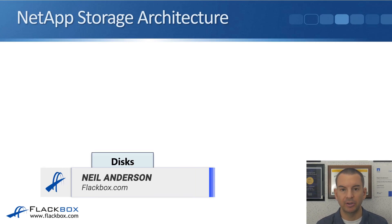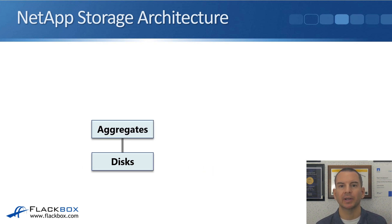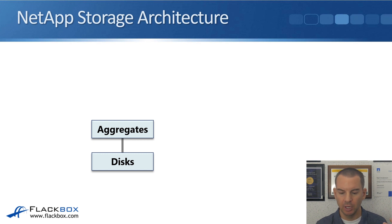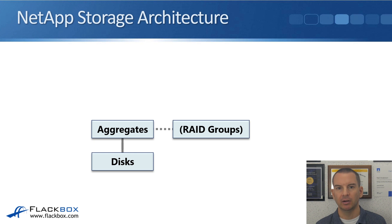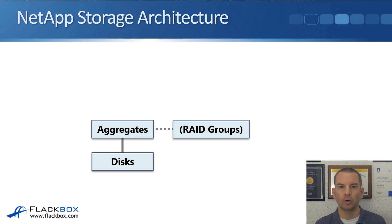The first thing at the bottom is our disks, our physical hard drives. The drives are organized into aggregates — an aggregate is just a collection of physical drives. One of the attributes on an aggregate is a RAID group. Say we've got an aggregate with 40 disks: how many of those disks are going to be storing data and how many are going to be used as parity drives? That's your RAID group on your aggregate.